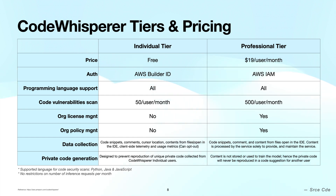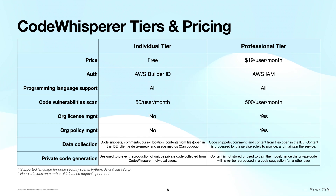For the Individual tier, an existing AWS account is not a prerequisite — individual developers can sign up and sign in using an email address with an AWS Builder ID. Under the Professional tier, AWS IAM Identity Center will be used for authentication of an existing account in order to use the Amazon CodeWhisperer service.